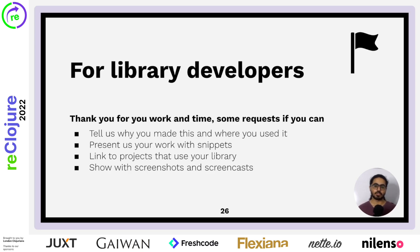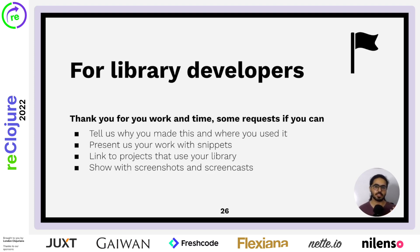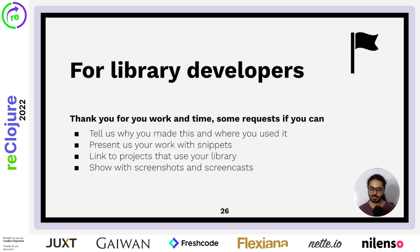For library developers — first of all, thank you so much for your work and time and for putting your library out there for others to use. I have just some tiny requests. Tell us why you made this library and where you used it — understanding your use case can make a beginner who has a similar use case gravitate more towards your library. Another thing: present us your work. Show us in small snippets, in short form, with common operations that can be done with your library. If that's not possible, link to projects that use your library — have us read the code there. Those are snippets too, but much bigger and even better because they are in context. And if you can make the time, screenshots and screencasts — seeing is way, way, way more effective than telling.